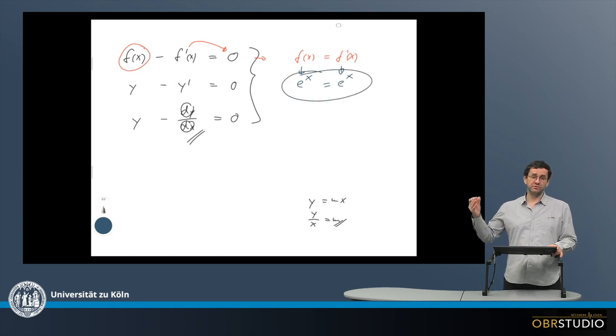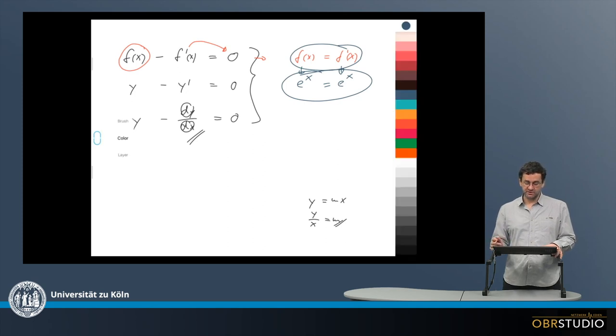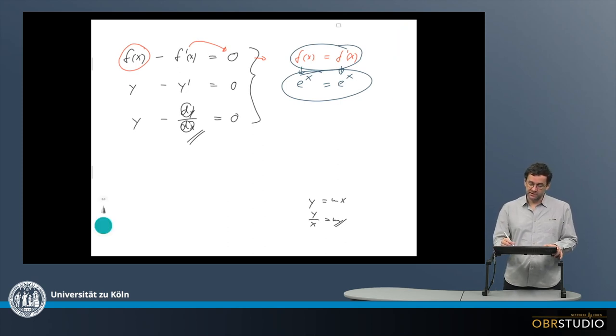and the derivative of e to the power of x is also e to the power of x. So this is a correct solution to the above equation. And this then also solves the question, what is f of x, because it is e to the power of x.